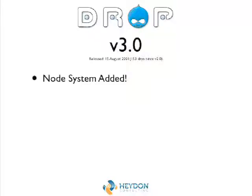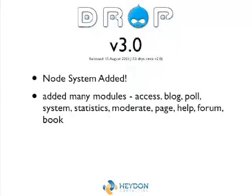With the node system, because as you know with Drupal 6 and 7 you can add your content types as you want — all content types were hard-coded in Drupal 3. We had things like the blog module, the page module, the forum module, and the book module, which were all basically different types of nodes.